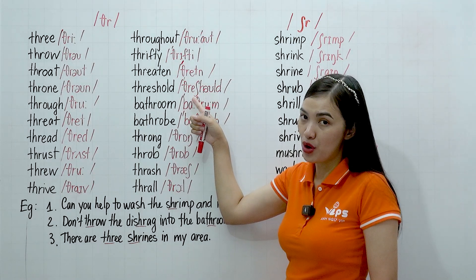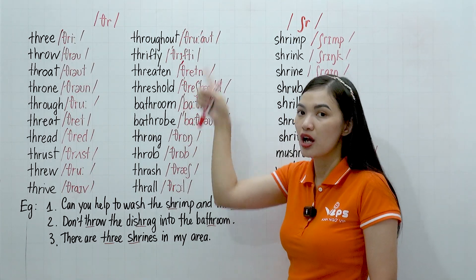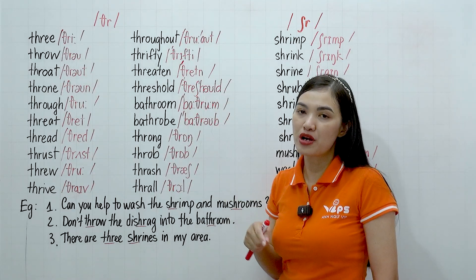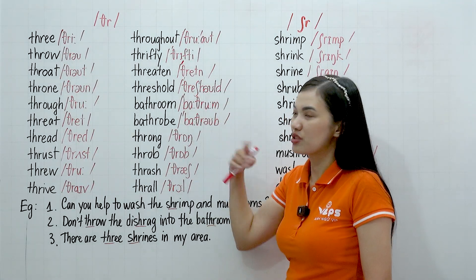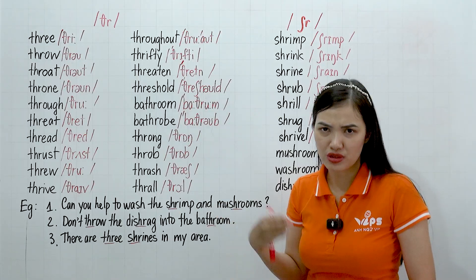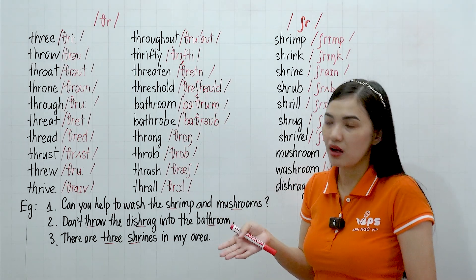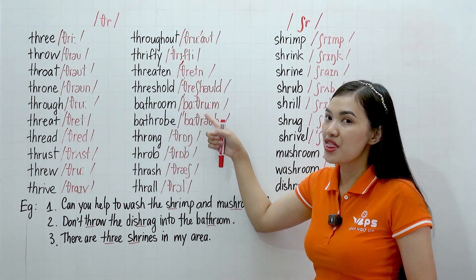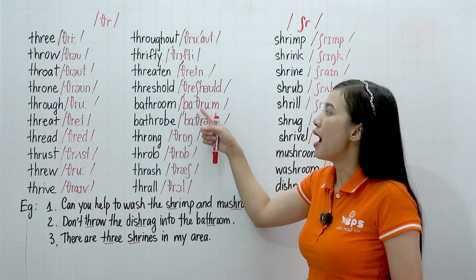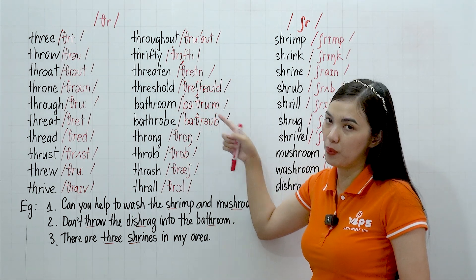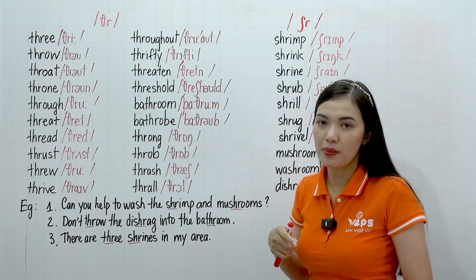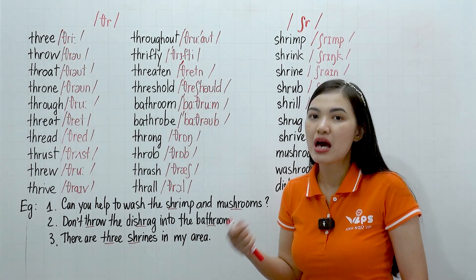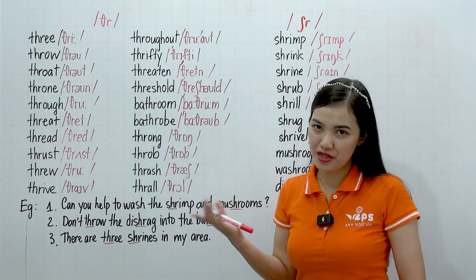And this one — thrash, threshold, threshold, just like the limit or limitation of something. And this one — bathroom. You are familiar with this one, right? Bathroom, bathroom, bathroom. Don't say 'bathroom' or 'bathroom' incorrectly — bathroom, bathroom.